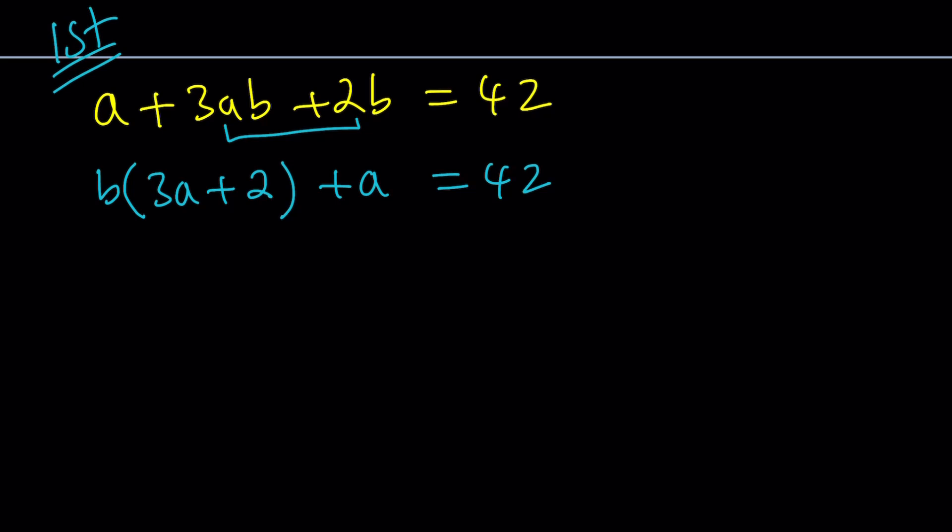Let's factor out a B here. That's going to give us B times 3A plus 2, and then plus A equals 42. My goal is to isolate B and write it totally in terms of A. I'm going to subtract A from both sides first, B times 3A plus 2 equals 42 minus A.